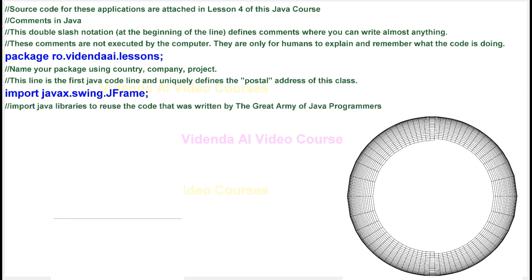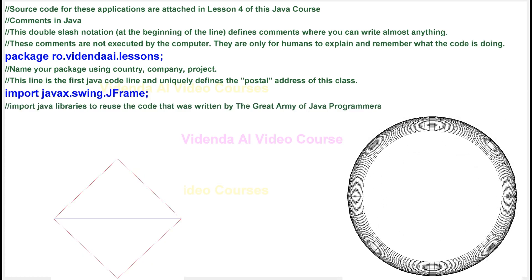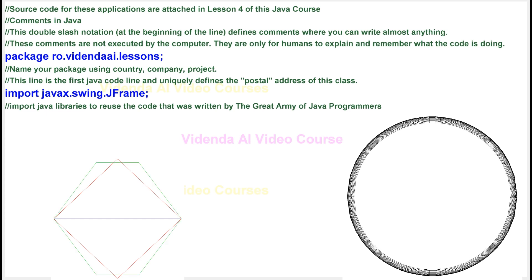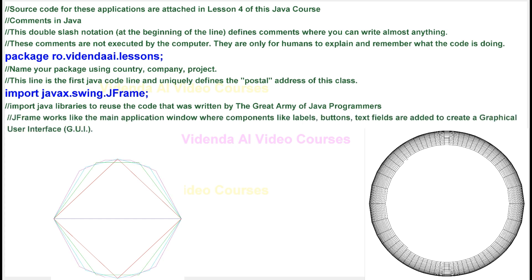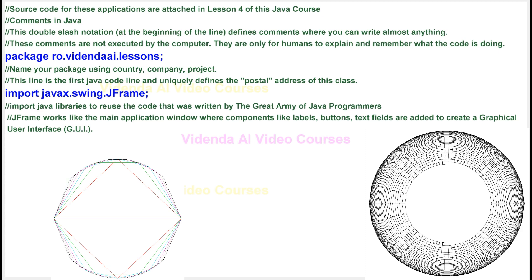Import Java libraries to reuse the code that was written by the great army of Java programmers. JFrame works like the main application window where components like labels, buttons, text fields are added to create a graphical user interface, GUI.